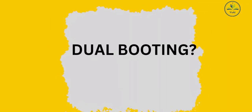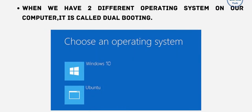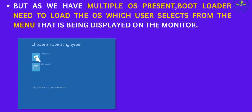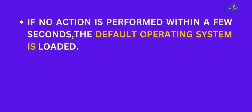Next is dual booting. When we have two different operating systems on our computer, it is called dual booting. Since multiple operating systems are present, the bootloader needs to load the operating system which the user selects from a menu displayed on the monitor. If no action is performed within a few seconds, the default operating system is loaded.